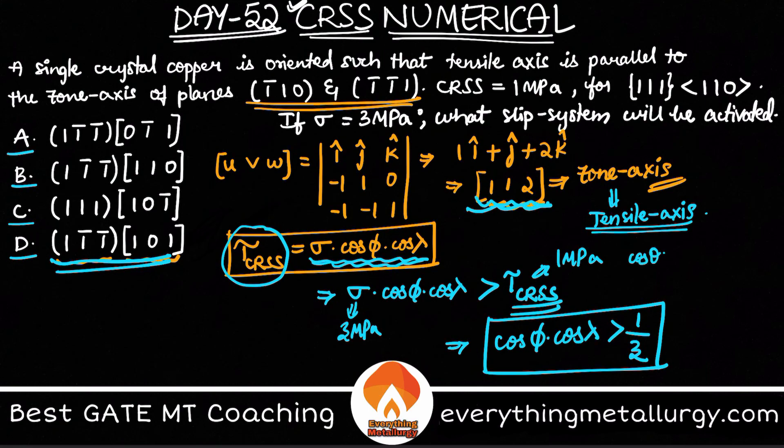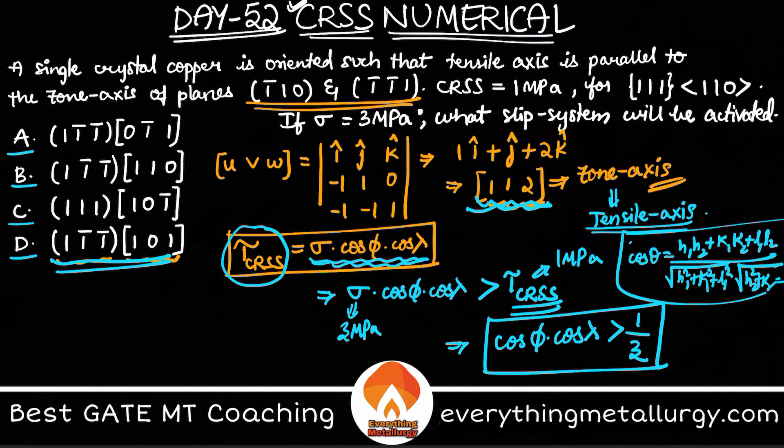We know that formula already: cos θ equals (h1h2 + k1k2 + l1l2) divided by root of (h1² + k1² + l1²) into root of (h2² + k2² + l2²). Cos φ is the zone axis or tensile axis [112] with the fourth option (11̄1̄).